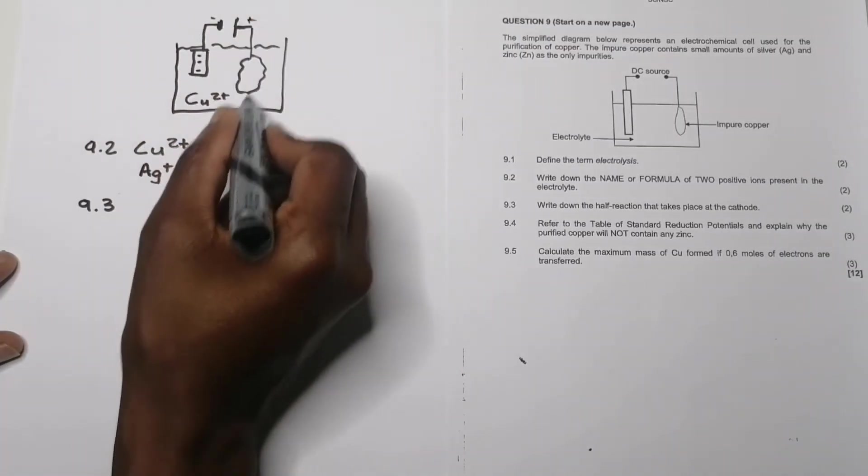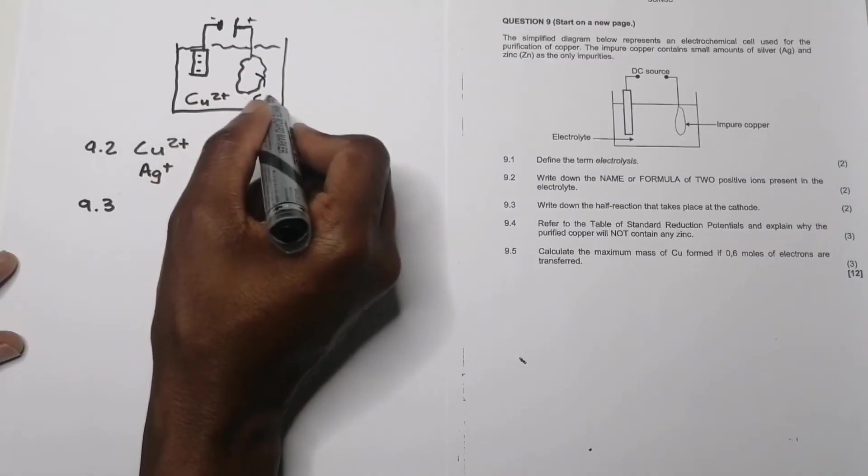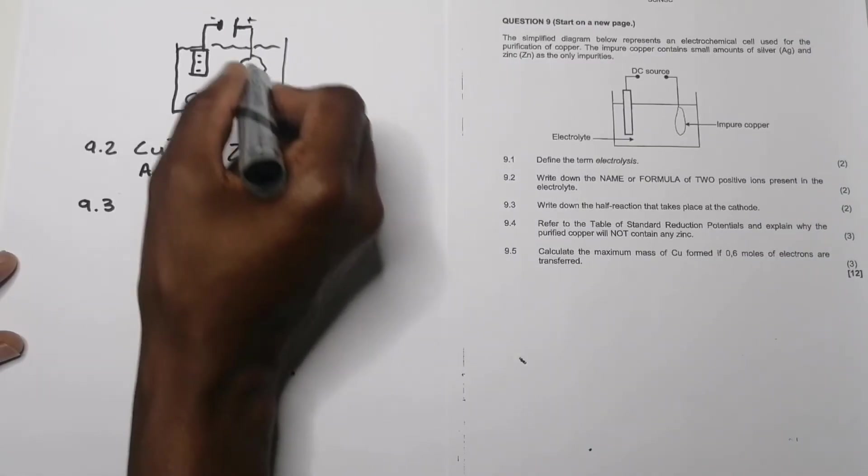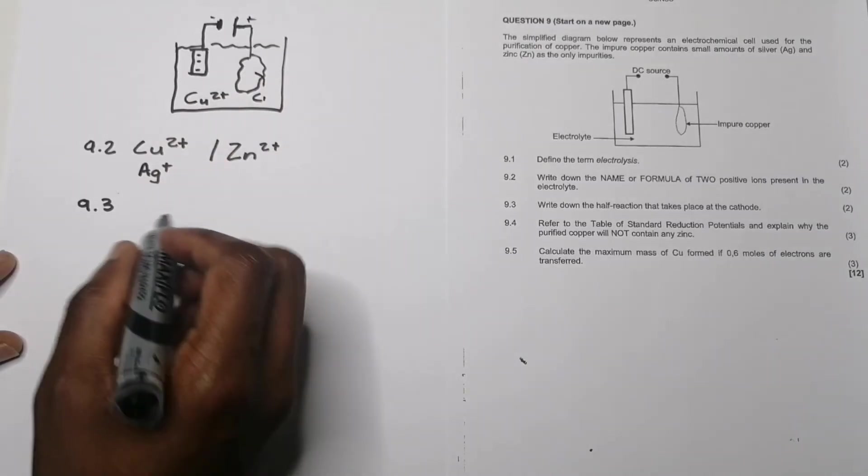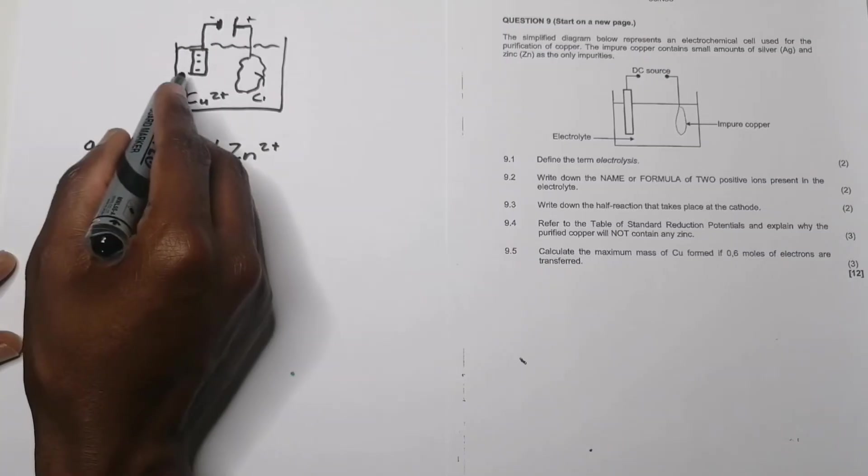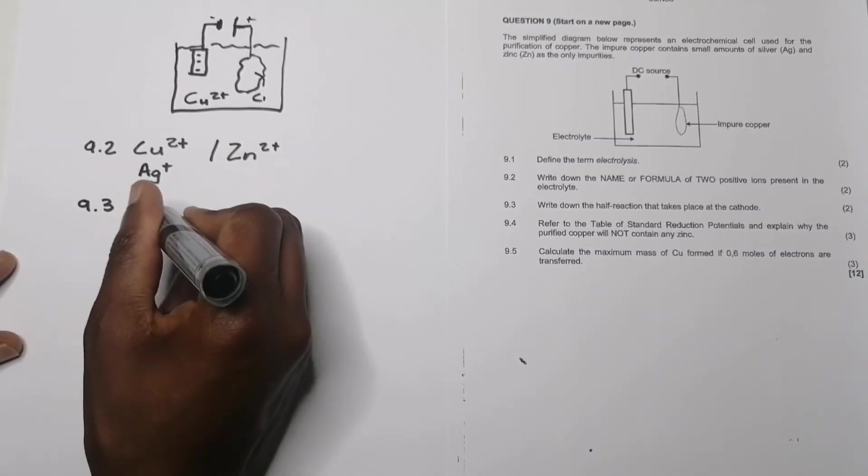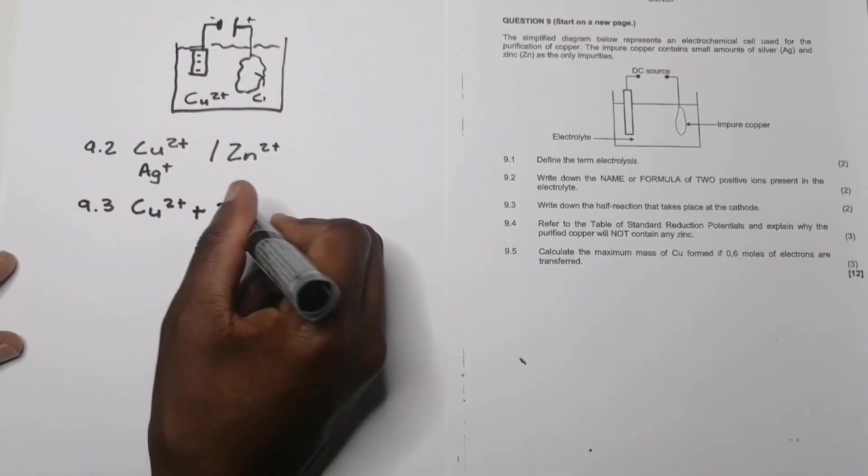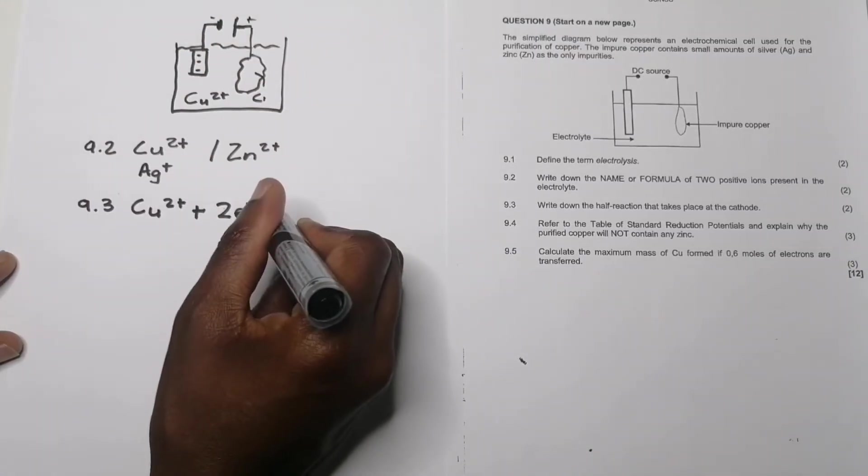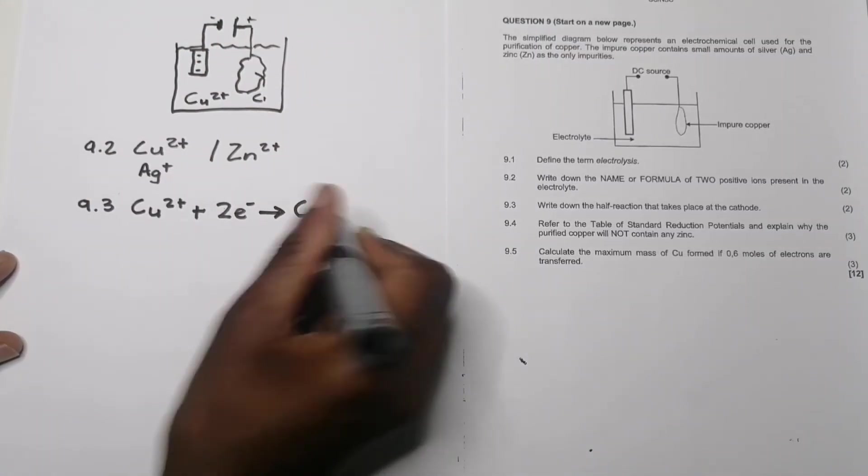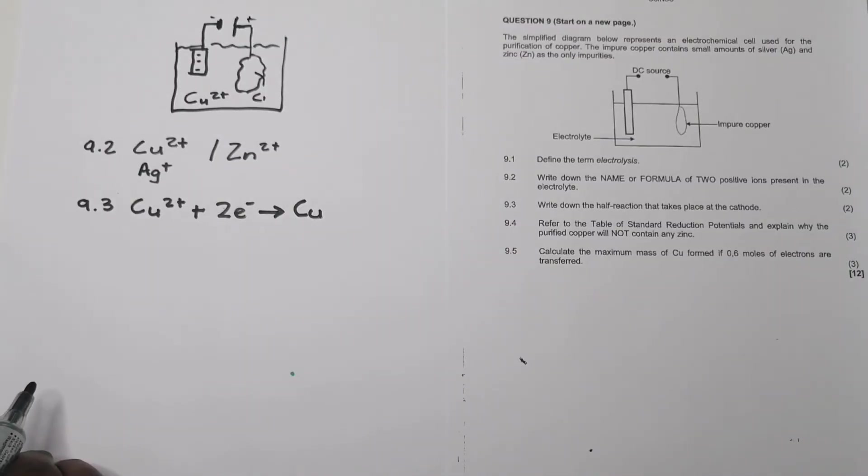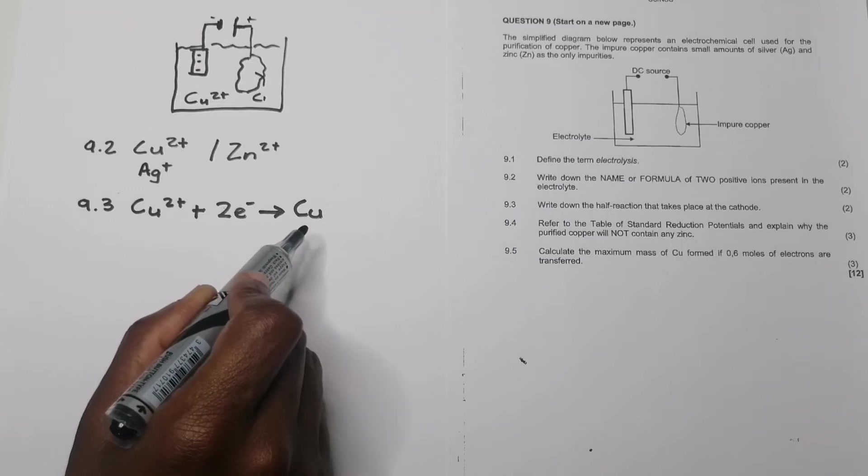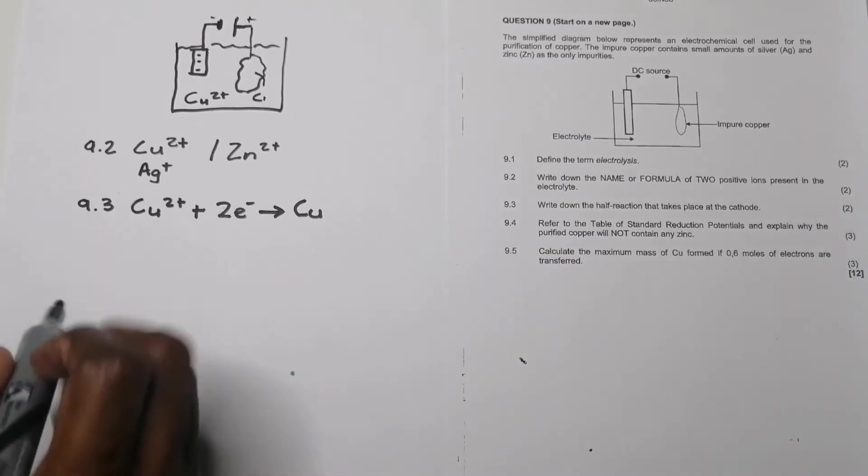That would be the positive side where copper is breaking down and becoming copper 2+. On the cathode side, the negative side, this is where we will have copper 2+ ions from the electrolyte receiving electrons that are provided by the cell and thereby becoming copper. So that's the half reaction that would take place: Cu²⁺ + 2e⁻ → Cu. Please be very careful that you only have one arrow there because that's the reaction that's taking place.